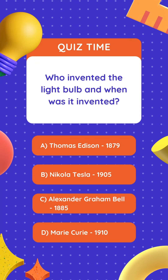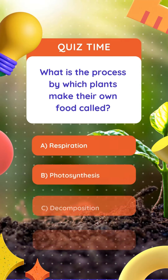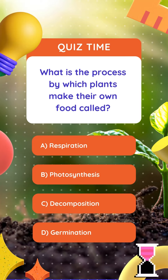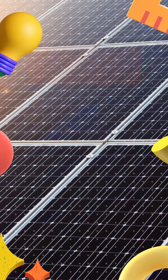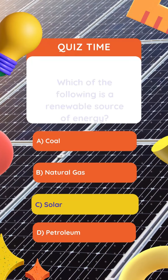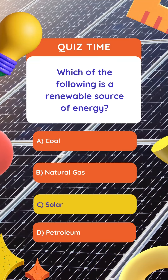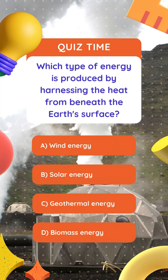Who invented the light bulb and when was it invented? What is the process by which plants make their own food called? Which of the following is a renewable source of energy? Which type of energy is produced by harnessing the heat from beneath the Earth's surface?